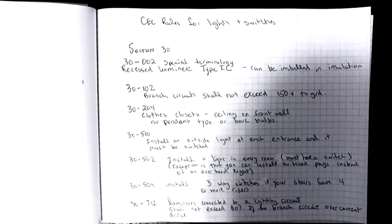30-102 tells us that branch circuits for lighting shall not exceed 150 volts to ground in a residential unit.